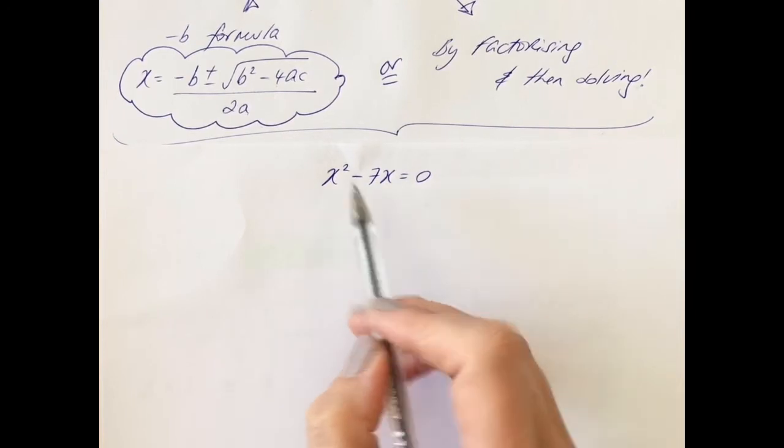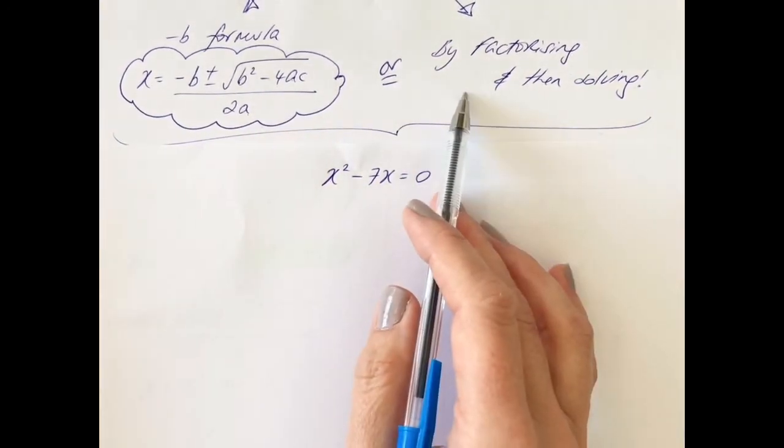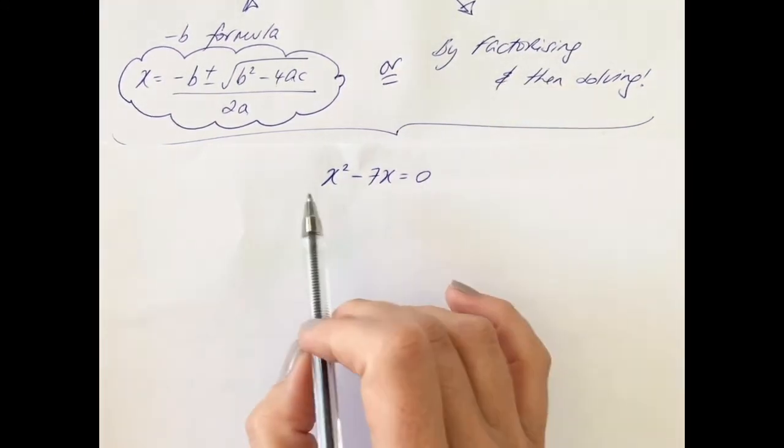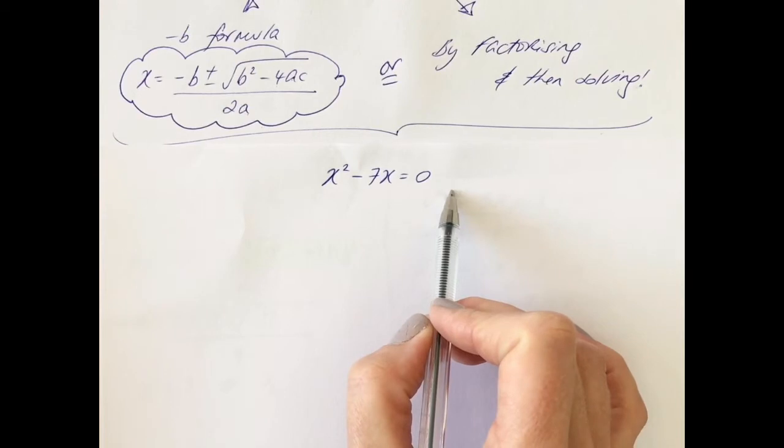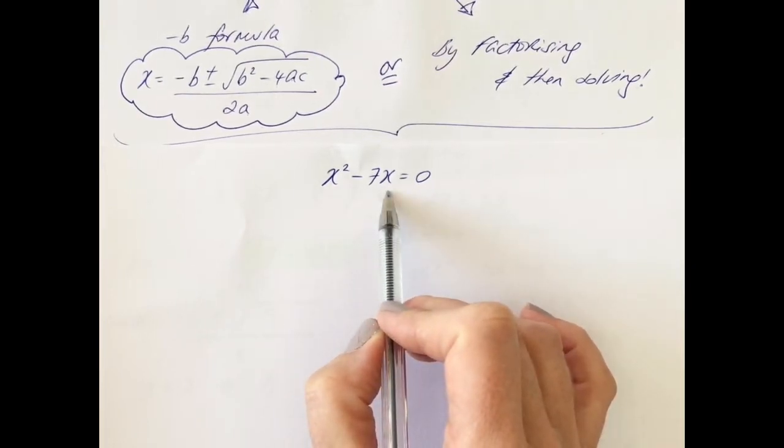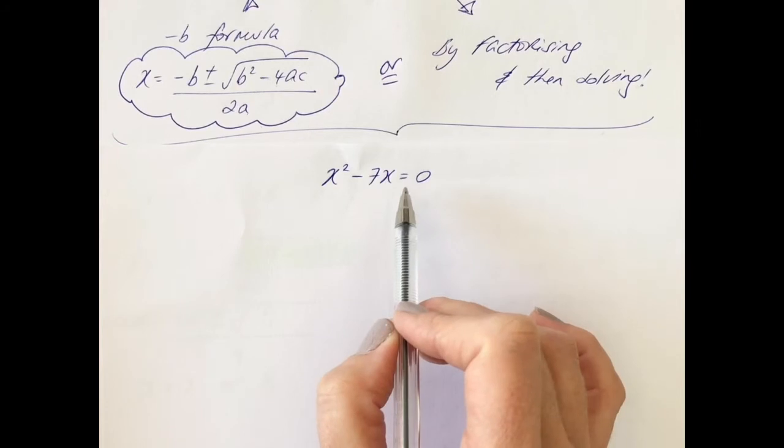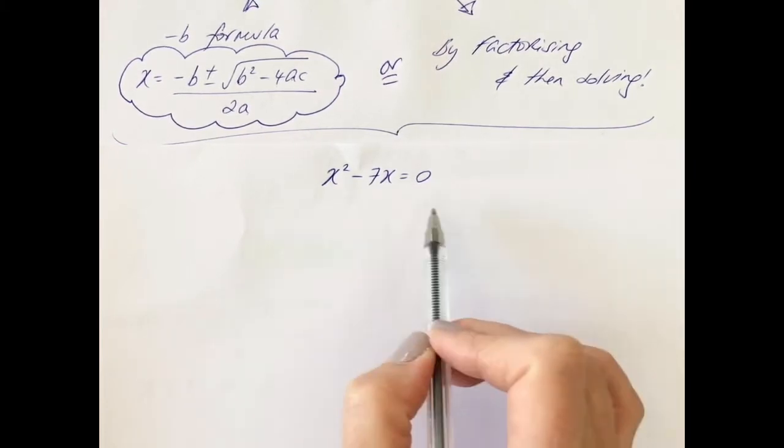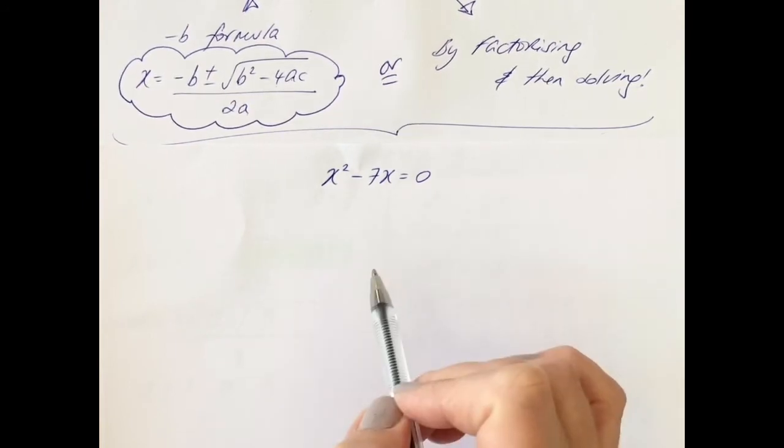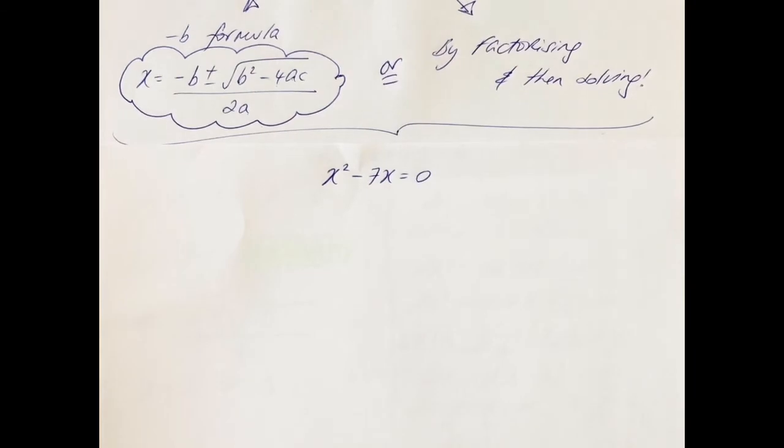But still we have two methods we can use: the minus b formula or we can factorize. The difference with the factorizing is it's not the quadratic trinomial type, in which case it might be one of the other types. Your other types of factorizing: type 1 is common terms, type 2 is grouped common terms, type 3 is difference of two squares, and type 4 is your trinomial quadratics. Be careful here, it's not the quadratic trinomial type so it must be one of the other types for factorizing. Press pause if you feel confident with this, otherwise listen up.